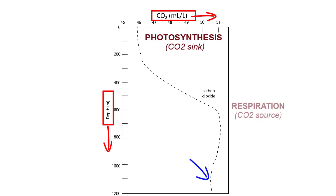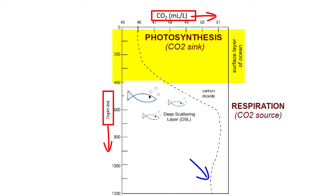Just under the surface layer, respiration dominates, where a large group of organisms collectively known as the deep scattering layer congregate during the day to avoid predators — that respiration produces carbon dioxide. Decomposition dominates in the deep ocean, where decaying organic material falls and collects, and decomposition is also a source of carbon dioxide.